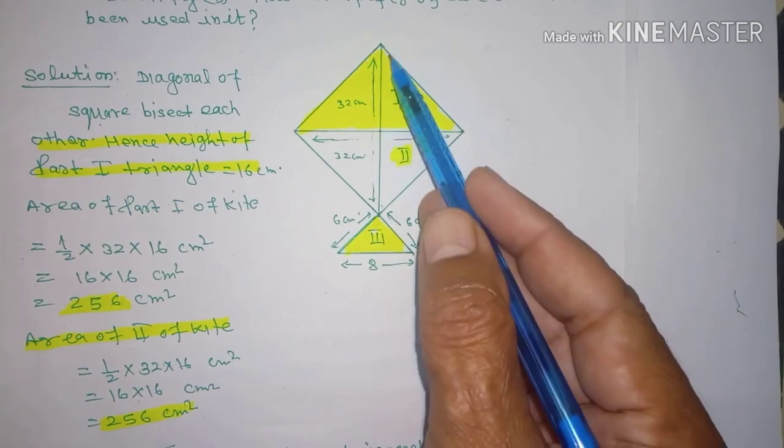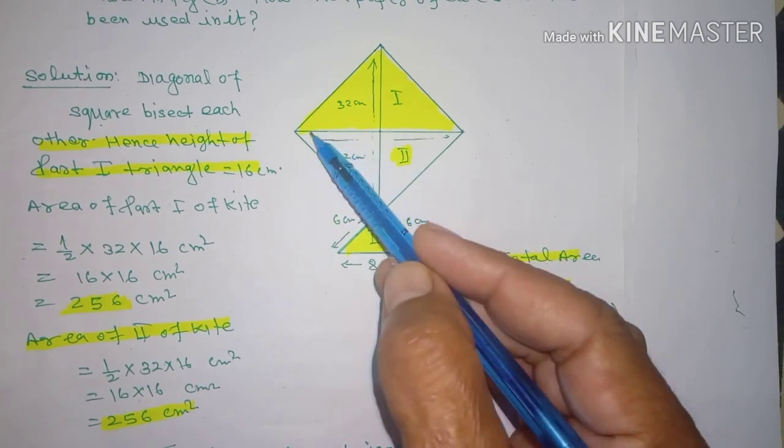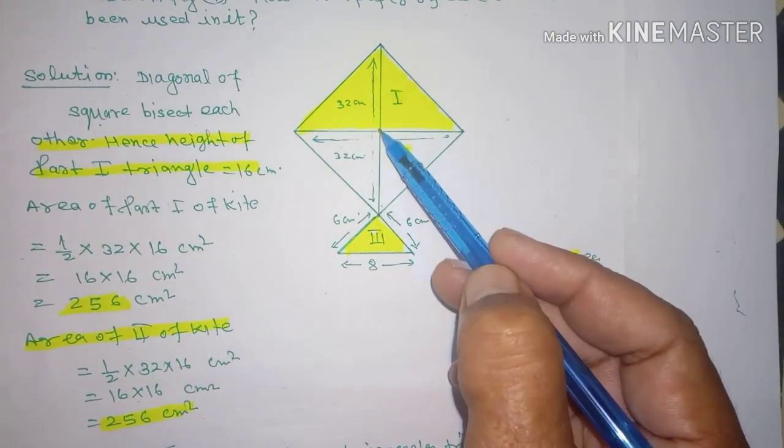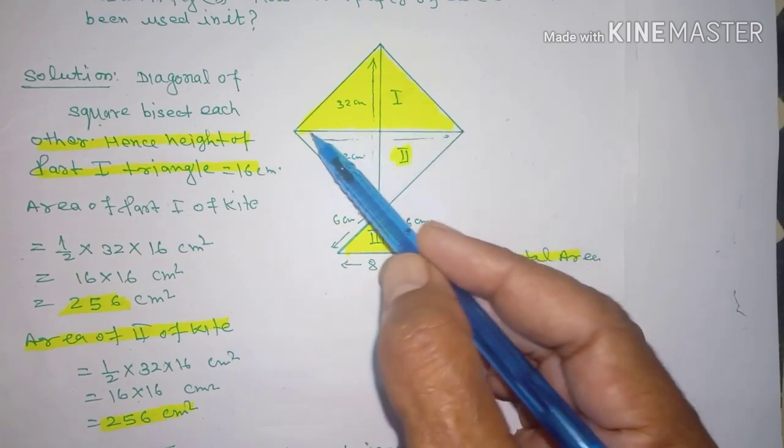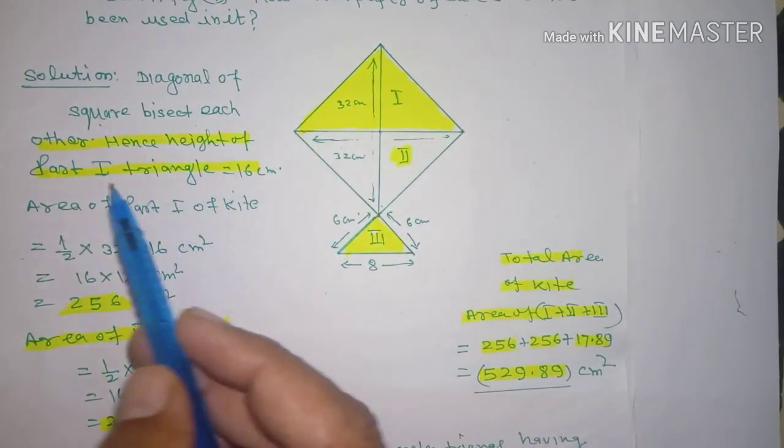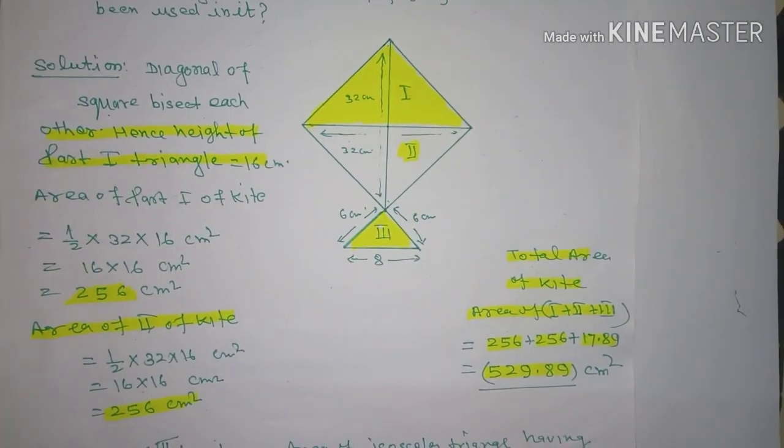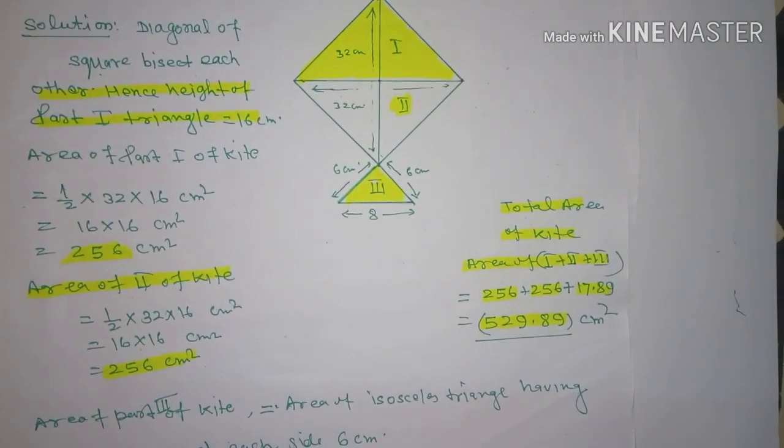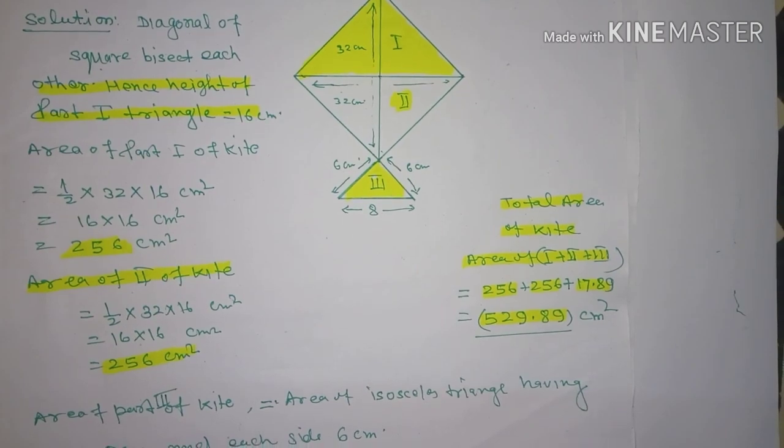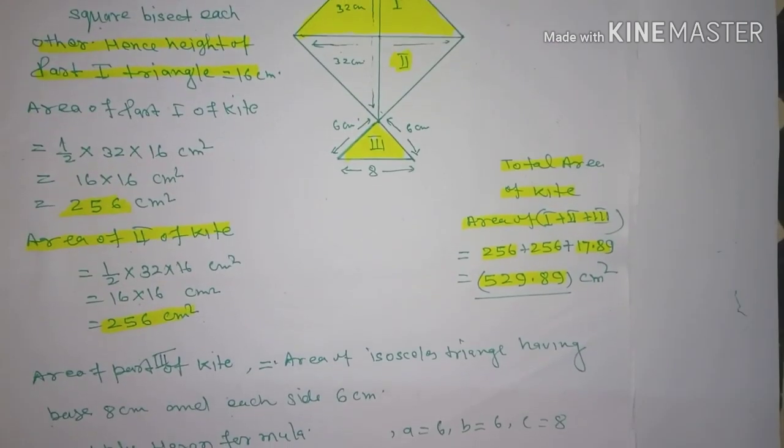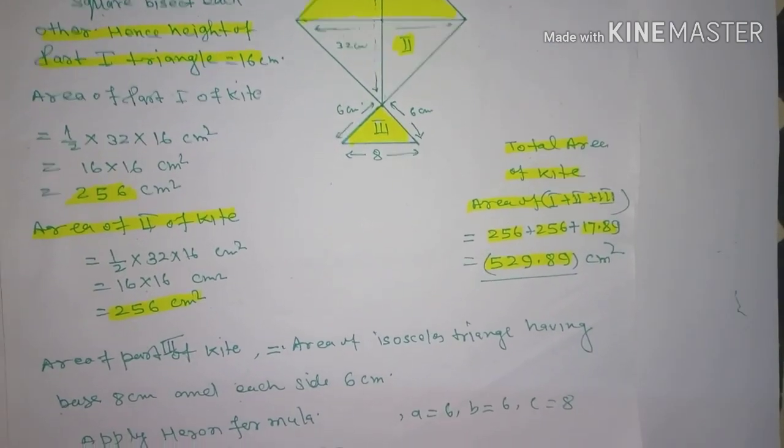Yeh kya hai, yeh iske diagonals hain. Yeh diagonals ko bisect karte hain, it means yeh ho gaya 16 cm. Total of 32. This is the first shape. Area = 1/2 × 32 × 16 = 16 × 16 = 256 cm².